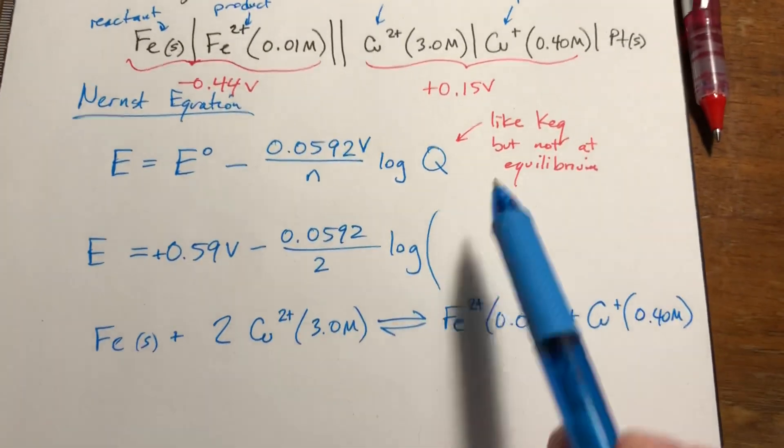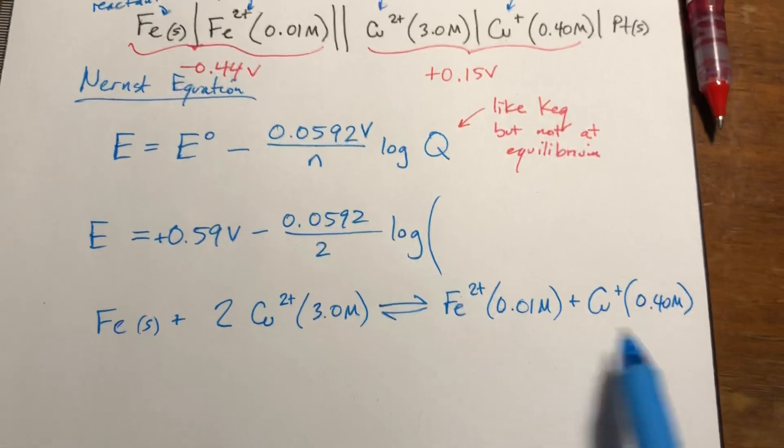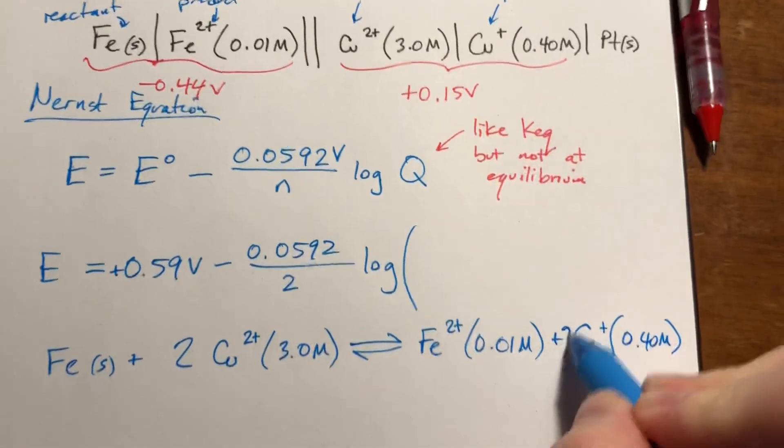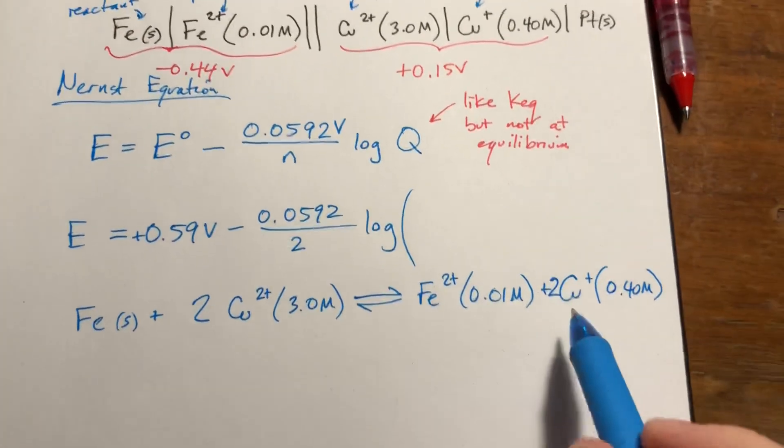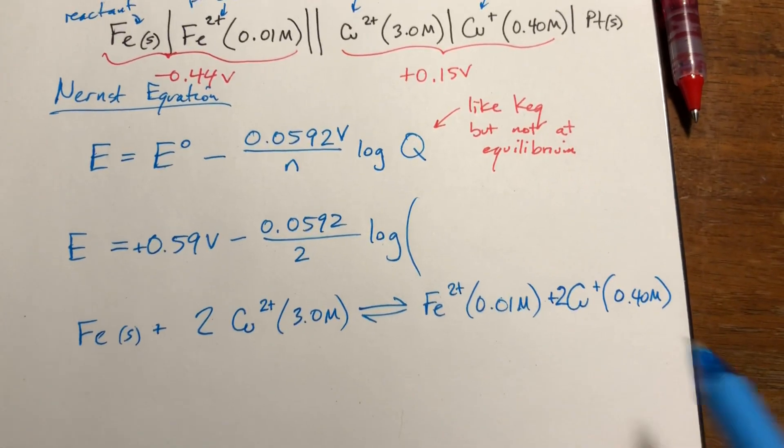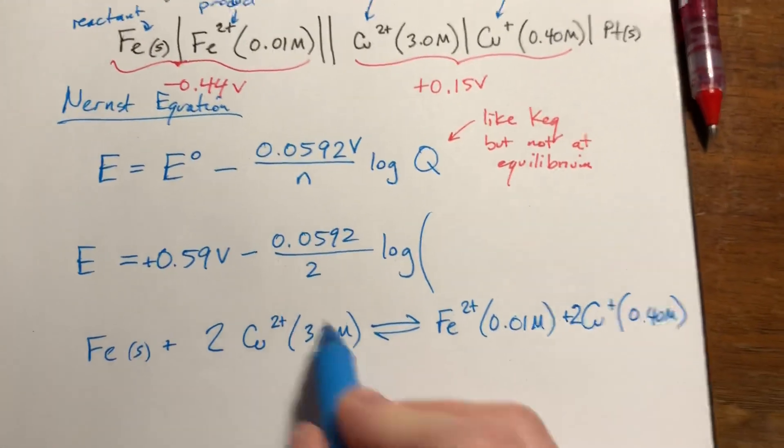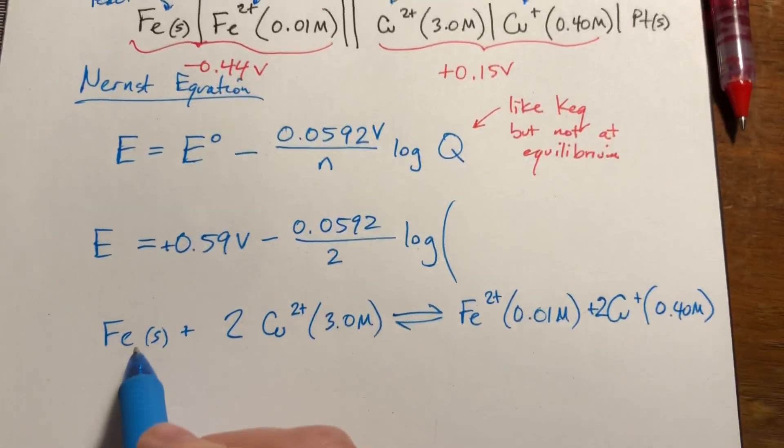So what we're going to do now is just pretend like this is KEQ. You're going to write products over reactants, oh yes, it's got a 2 in the front, products over reactants raised to the coefficients. Okay? So these are the products, these are the reactants, this is a solid, we can ignore that.